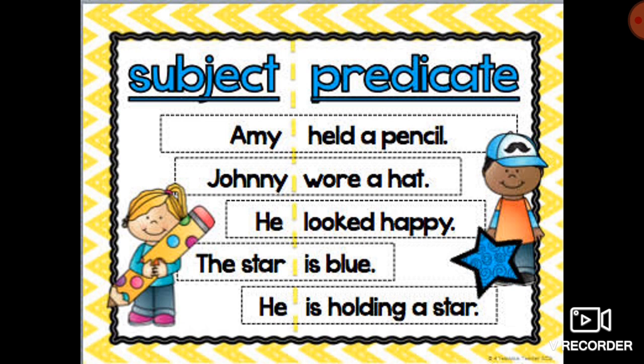'The star is blue.' 'The star' is the subject and 'is blue' is the predicate. 'He is holding a star.' 'He' is the subject and 'is holding a star' is the predicate.